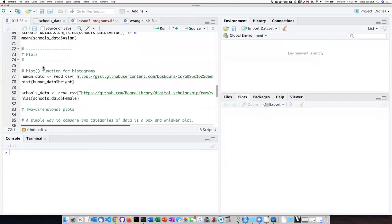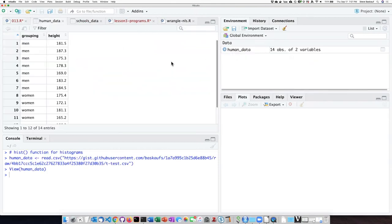Since I've cleared out my global environment, let's read the human heights data back in again. Just to refresh our memories, here's what it looks like. 14 values with seven heights of men and seven heights of women.